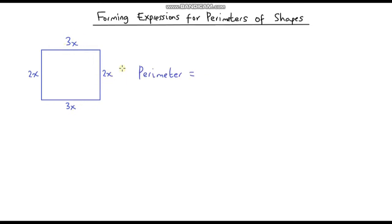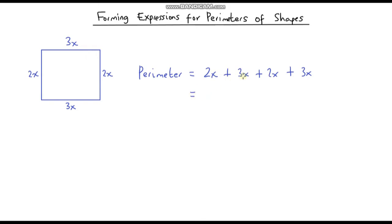We start with 2x, add on 3x, add on another 2x, and add on 3x. We've now formed an expression for the perimeter. These are all like terms, so we can simplify: 2x plus 3x gives 5x, plus 2x gives 7x, plus 3x gives 10x.